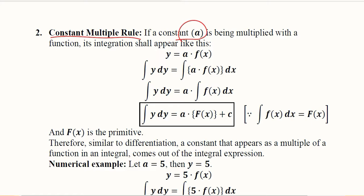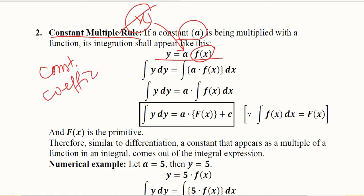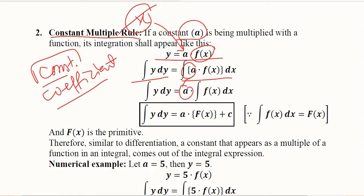Now let us see how we can apply the constant multiple rule, similar to what we did in differentiation. Here a is the constant coefficient of the function f(x). It is constant in nature — it has no x in it — and it is a coefficient because it is being multiplied. If we integrate both sides, writing dy and dx on the left and right respectively, the constant a comes outside, just as in differentiation, and we integrate the function f(x) according to the rules of integration.